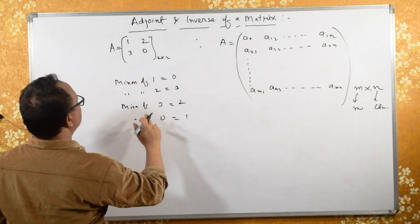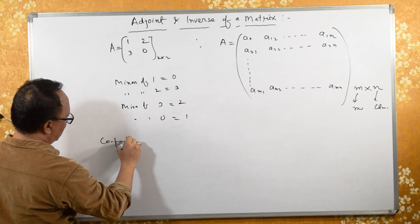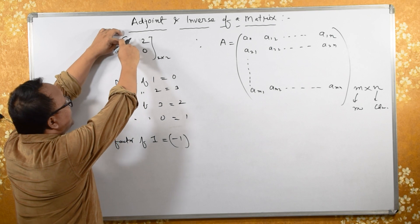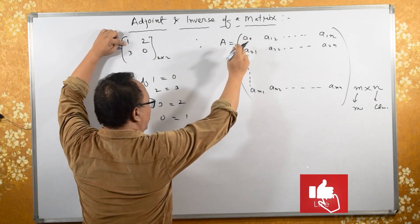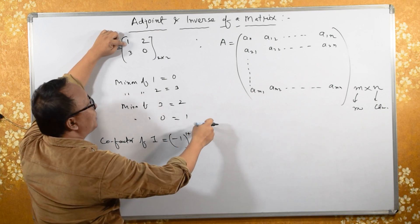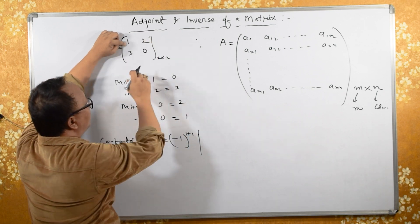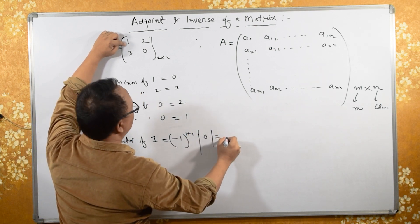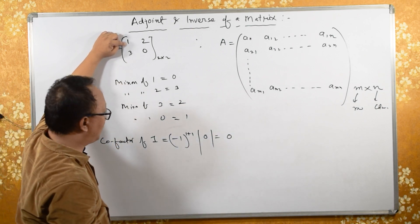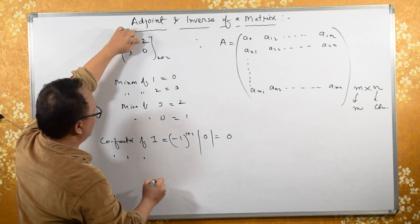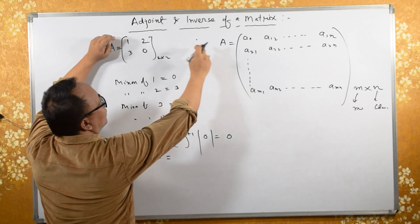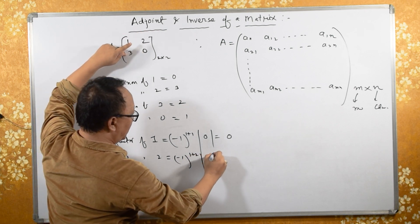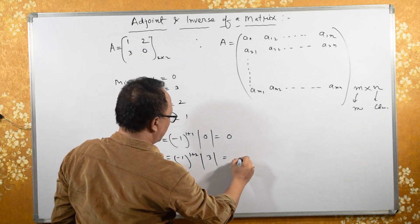The cofactor includes the sign. The cofactor of element 1, located at first row, first column, is (-1)^(1+1) times its minor, which is (-1)^2 times 0, equals 0 — no sign change. The cofactor of element 2, at first row, second column, is (-1)^(1+2) times 3, which gives minus 3.